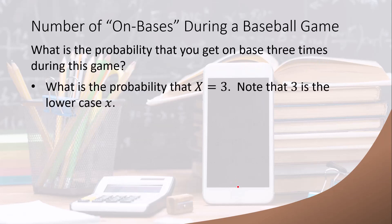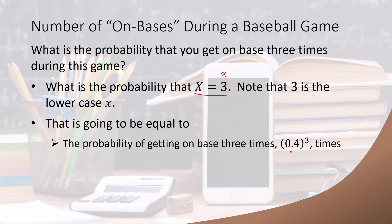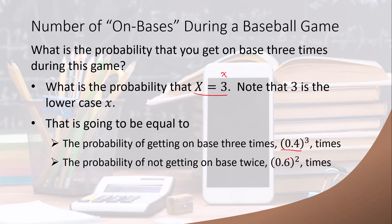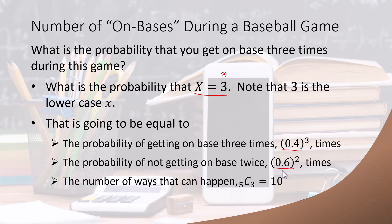Let's ask ourselves: what is the probability that in a given game with five at-bats you actually got on-base three times? In terms of random variables, we are asking what is the probability that X equals 3. That is going to be 0.4 cubed — the probability of getting on-base three times — times the probability of not getting on-base the other two times, which is 0.6 squared, multiplied by the number of ways that can happen.